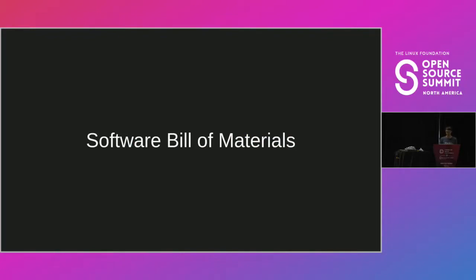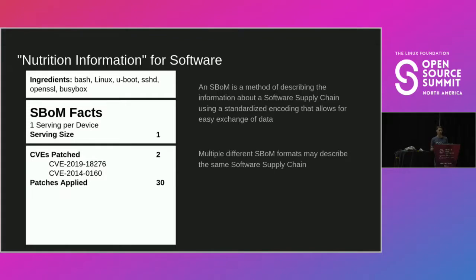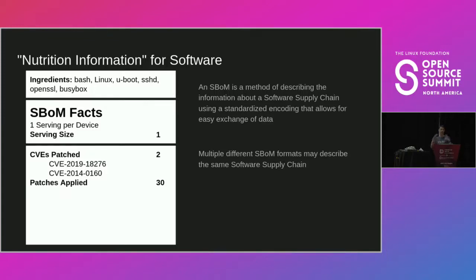The software bill of materials — the way I like to describe it is it's the nutrition information for your software. Like ingredient labels on food, it's a standardized way to quickly see what's in what we're shipping. An SBOM is a standardized encoding that allows us to easily exchange information about what's in our software. There are multiple SBOM formats out there — SPDX and CycloneDX. You can think of the SBOM as the way you encode the information about whatever your software supply chain is.